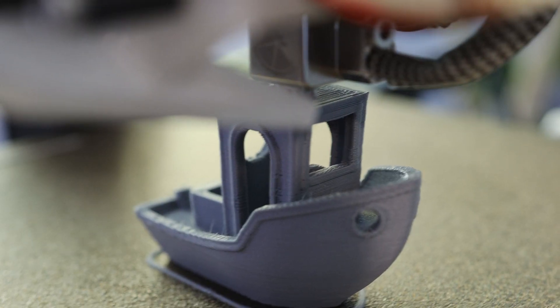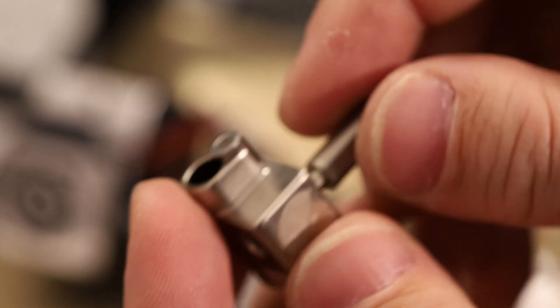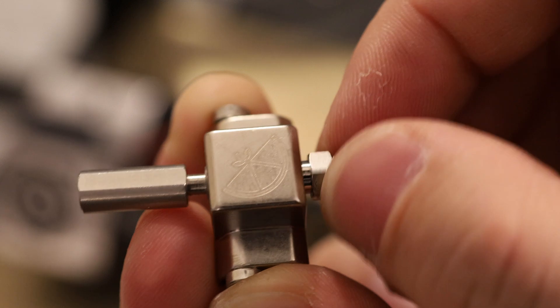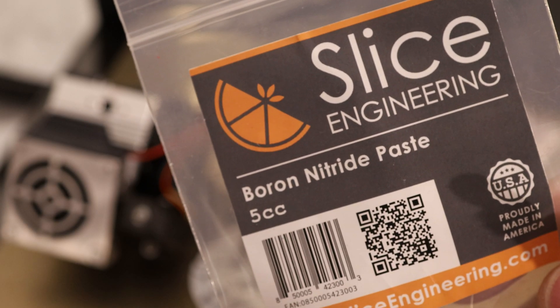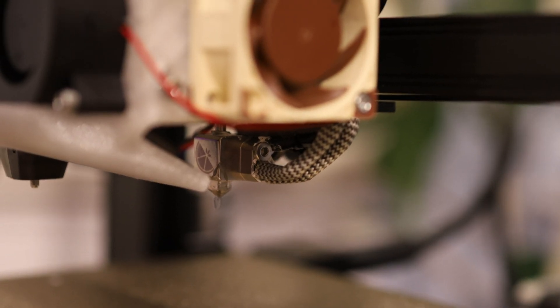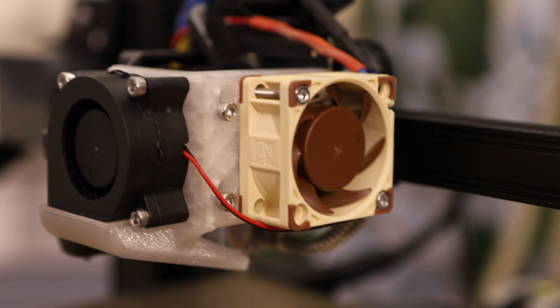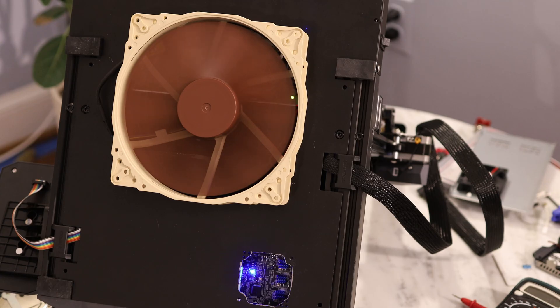I left links to all the products I used in the video description. The copperhead and CHT nozzles are compatible with most other printers, so even if you don't have an Ender 3S1, you can still use these upgrades to get an extra boost in print speed and quality. Also, did you notice my new fancy part cooling solution? It's my own design and works very well. I'll be doing a separate video on fan upgrades for the Ender 3S1.